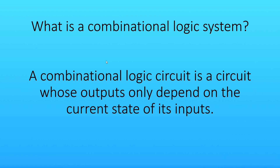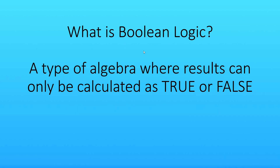Boolean logic is a type of algebra where results can only be true or false — you only have two states: true or false, or equivalently one or zero. This also allows us to use base two, or binary, as a number system to calculate boolean logic. Computers use boolean logic because you only have two possible states, which simplifies circuits down. This is pretty much the simplest form of logic you'll get — much simpler than working in base 10 or decimal.